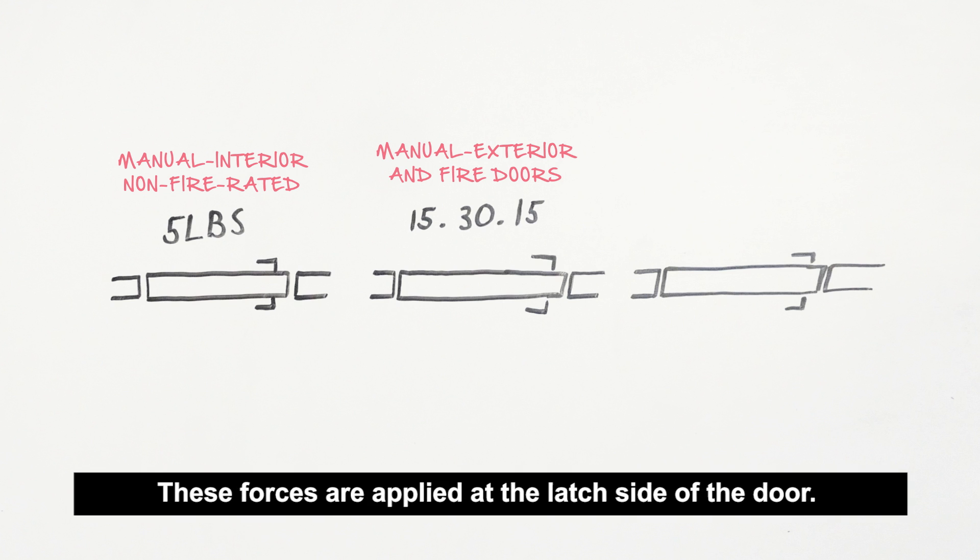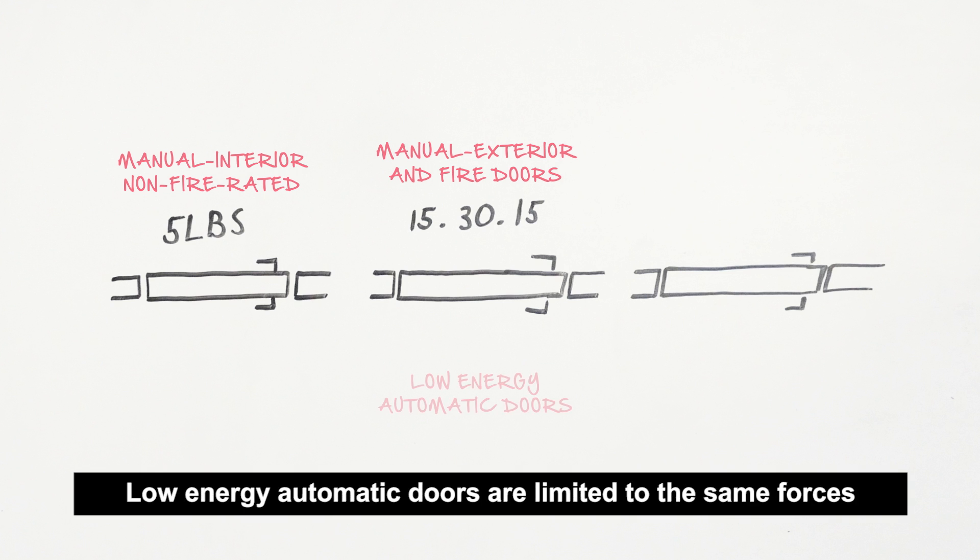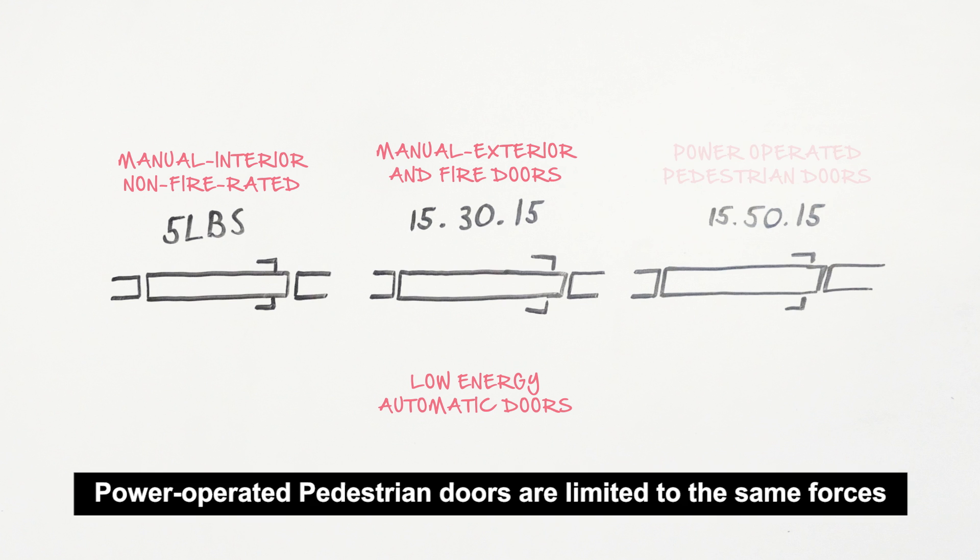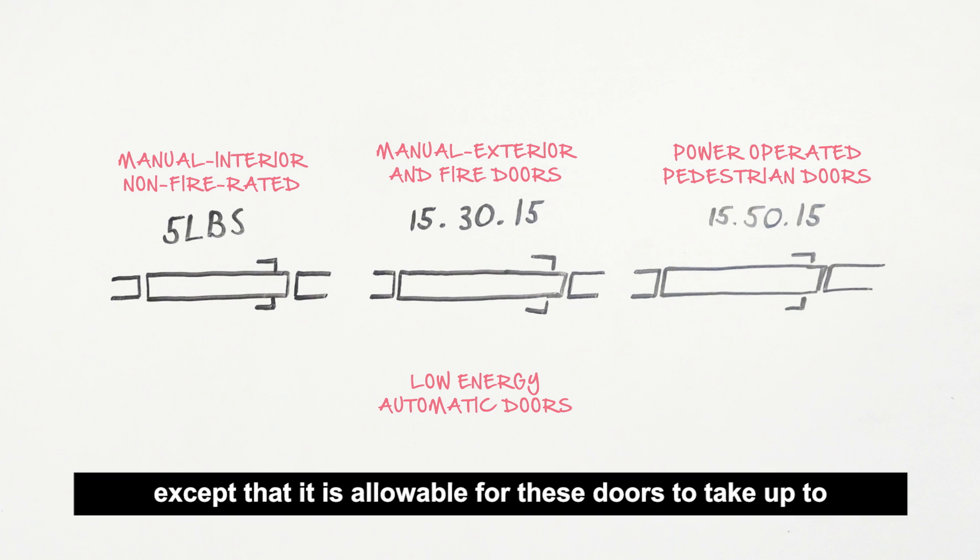These forces are applied at the latch side of the door. Low energy automatic doors are limited to the same forces as manual exterior doors and must meet ANSI BHMA 156.19 requirements. Power operated pedestrian doors are limited to the same forces except that it is allowable for these doors to take up to 50 pounds to set the door in motion. Power operated pedestrian doors are required to meet the ANSI BHMA A156.10 standard.